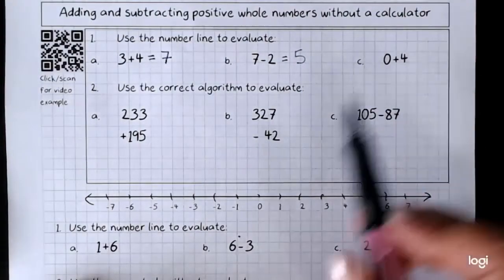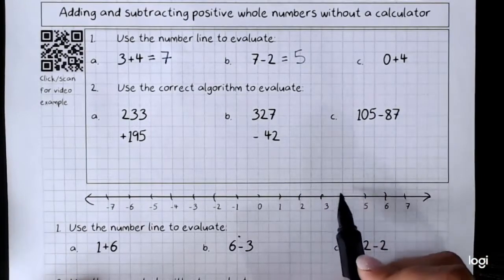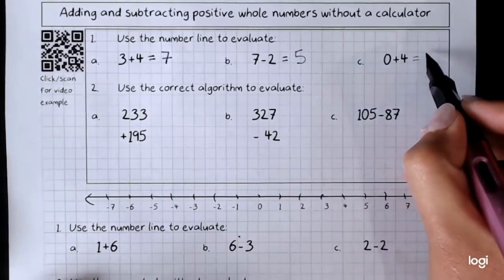0 plus 4. Start at the 0. Move up 4. 1, 2, 3, 4. We've got 4.